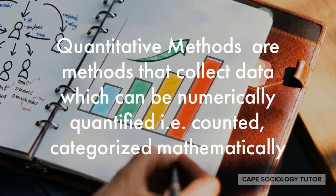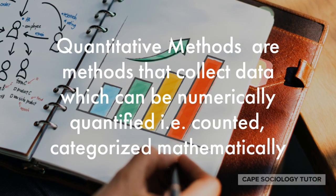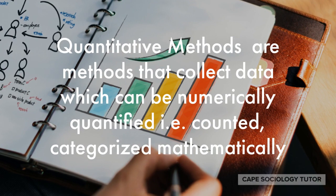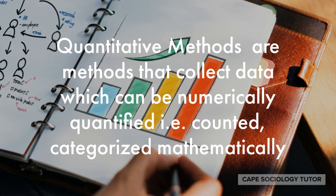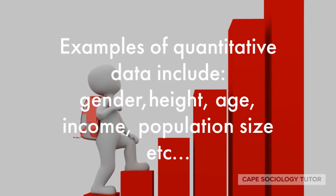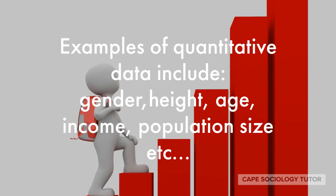Quantitative methods are methods that collect data which can be numerically quantified — that is, counted or categorized mathematically. Here are some examples of quantitative data: gender, height, age, income, population size, etc.